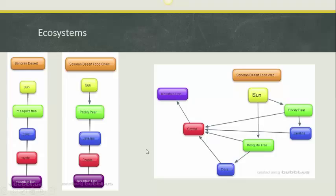So here are our two food chains. As you can see, we both start with the sun, so we just need one sun for our food web. And then we have the mesquite tree and the prickly pear. So our sun's energy we are going to link to the mesquite tree and to the prickly pear using lines with arrows showing the energy flow.